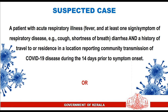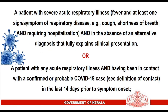Suspected case: a patient with acute respiratory illness, fever, and at least one sign or symptom of respiratory disease — for example, cough, shortness of breath, or diarrhea — and a history of travel to or residence in a location reporting community transmission of COVID-19 during the 14 days prior to symptom onset. Or a patient with severe acute respiratory illness, fever, at least one sign or symptom of respiratory disease, requiring hospitalization, and in the absence of an alternative diagnosis that fully explains the clinical presentation. Or a patient with any acute respiratory illness having been in contact with a confirmed or probable COVID-19 case in the last 14 days prior to symptom onset.